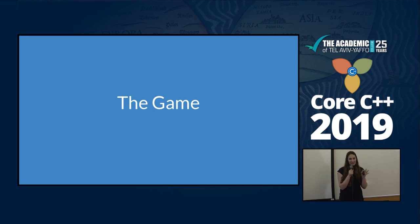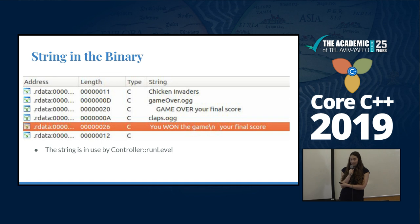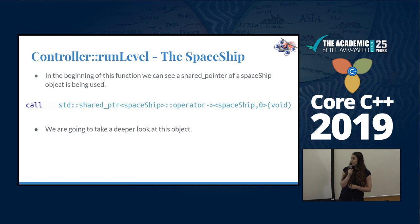After the small summary of the basics, we're going to the game itself. We have Chicken Invaders, but we want to understand how to begin — how would I know how to win the game? The basic thing you can do is look at the strings. The binary is compiled with strings that you can look at, and I found this one: 'You won the game. Your final score.' — seems like what we wanted. This string was called from a function called 'controller run level'.